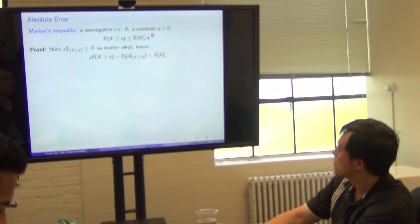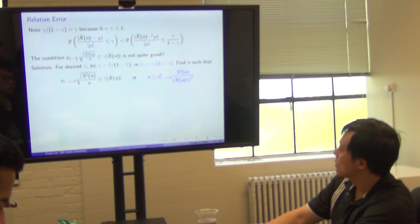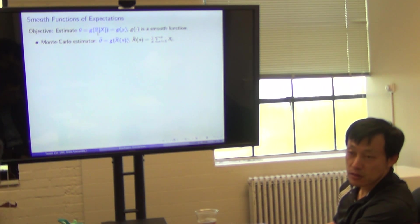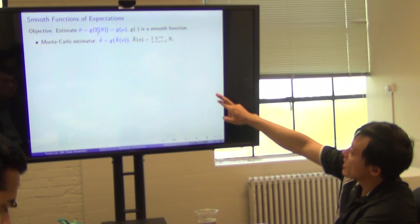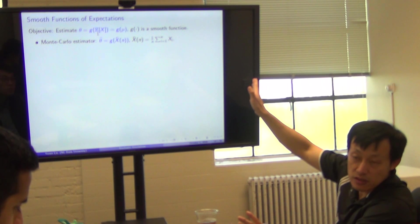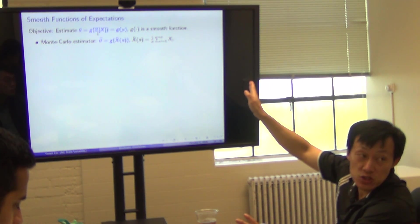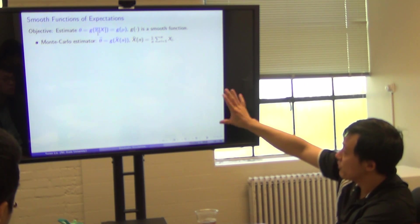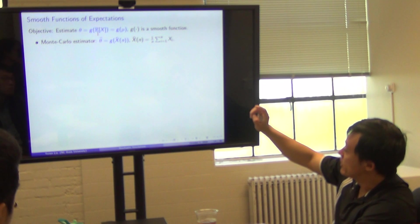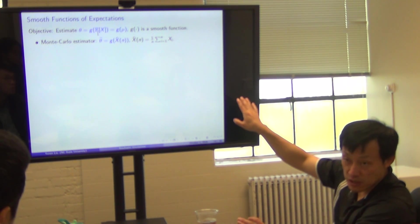Our objective function is theta, or estimating theta, which is equal to a function of expectation. Of course, if theta is E[g(X)], it's also easy. Just estimate g(X), regarding g(X) as Y. But if the objective function is g(E), it's different.